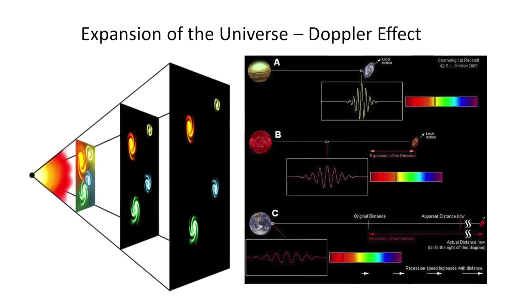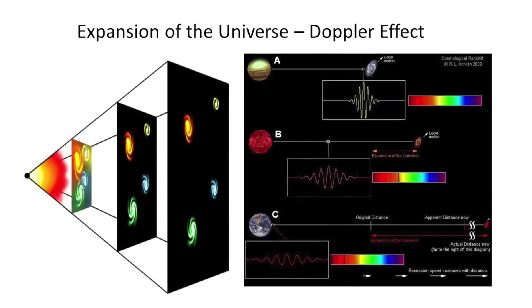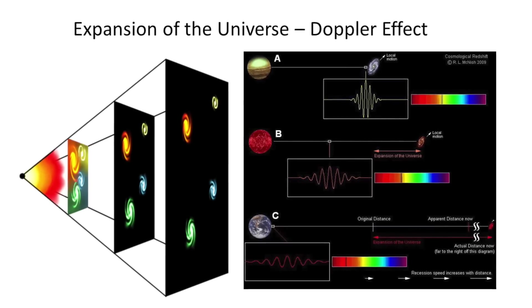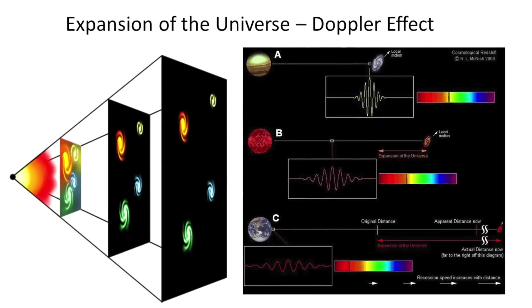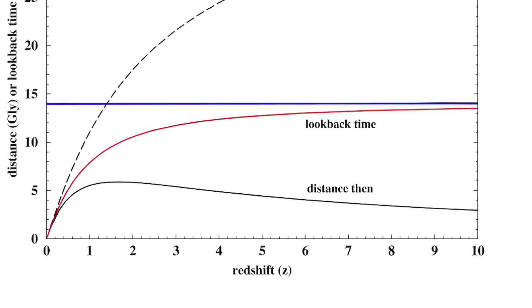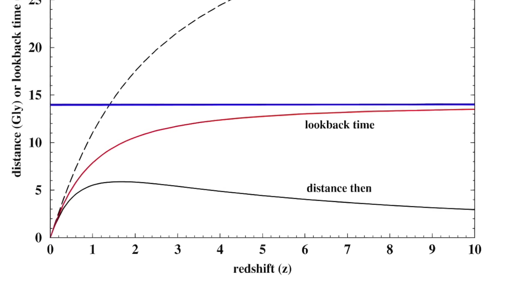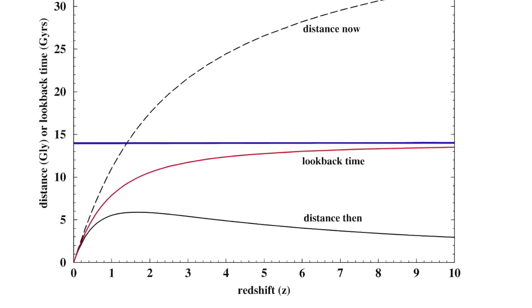Moreover, the space already traversed by that light continues to expand while the light continues to the observer. So, a galaxy that is one billion light years distant from Earth at the time its light is emitted will be further away by the time that light arrives at a telescope. The look-back time or distance at the time the light was emitted, plus that additional distance arising from the expansion of space during the light's travel time, is referred to as the co-moving radial distance.